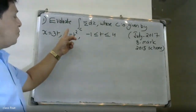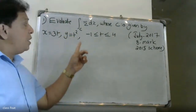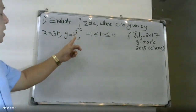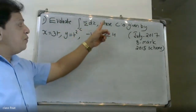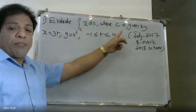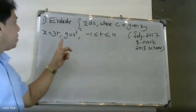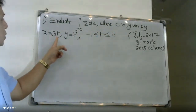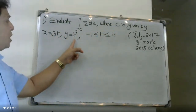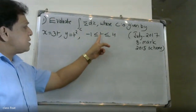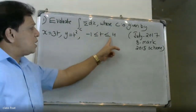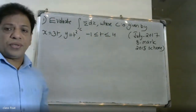The first question is to evaluate the integral along C, where C is given by x equal to 3t, y equal to t squared, with t ranging from minus 1 to less than or equal to 4.